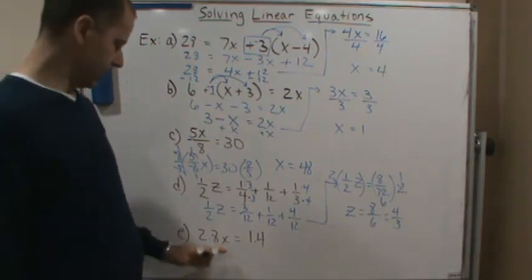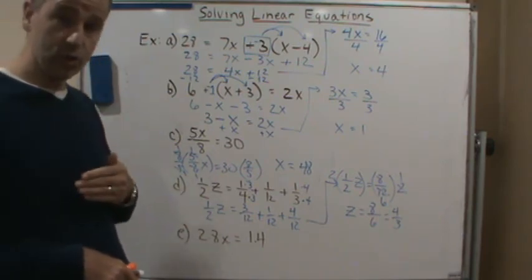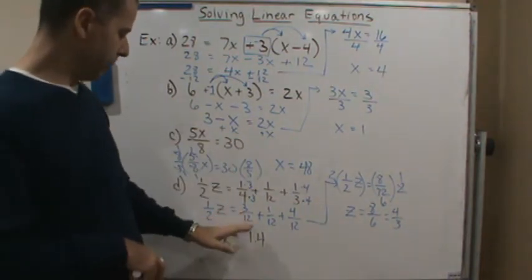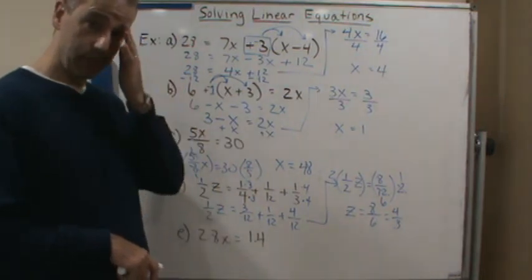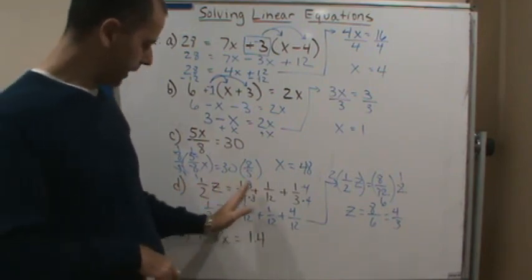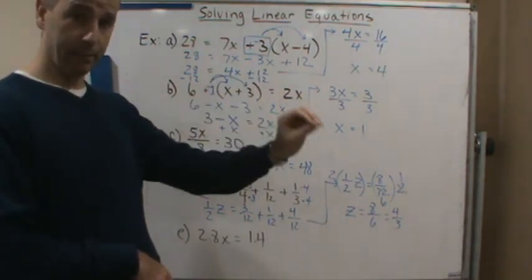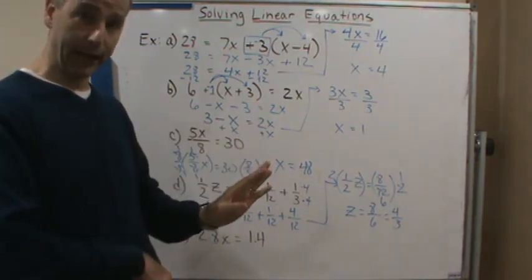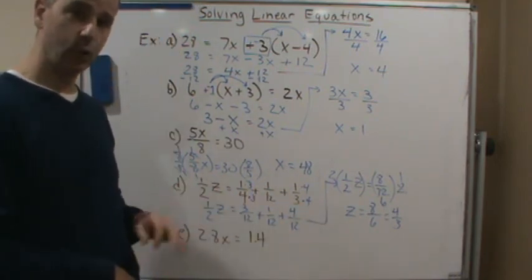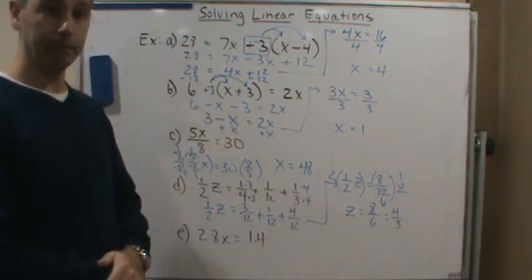Before moving on, there's another way I could have done Part D: multiply everything by 12 — the lowest common denominator. As long as I multiply both sides by the same number I'm okay, so multiplying everything by 12 gets rid of all the fractions and gives an equation with just integers. That's typically the way I would do it.